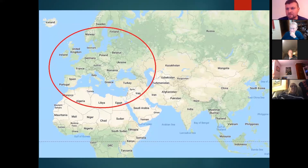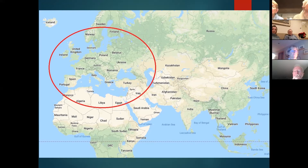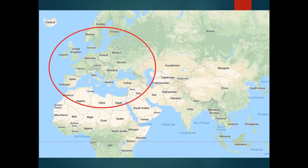This is the general area where browntail moth is native to in Europe. As you can see, it stretches down to North Africa and into Eastern Europe, but the stronghold is in Western Europe. This is important because it's coming from basically the same latitudes that we are here in Maine. Areas at the same latitude have the same climate and weather, so it's pre-adapted to our coldest winters and our warmest summers.